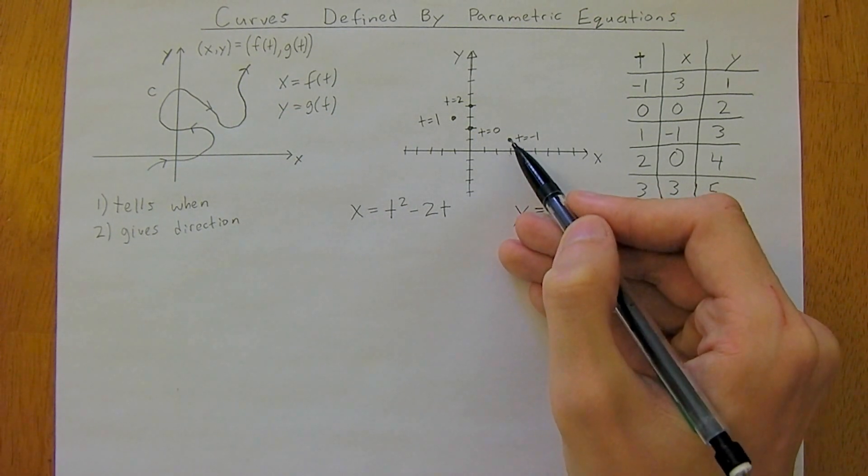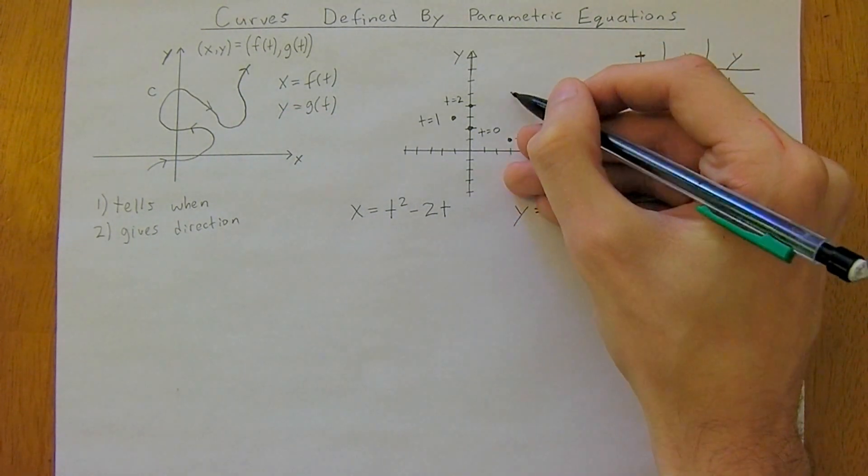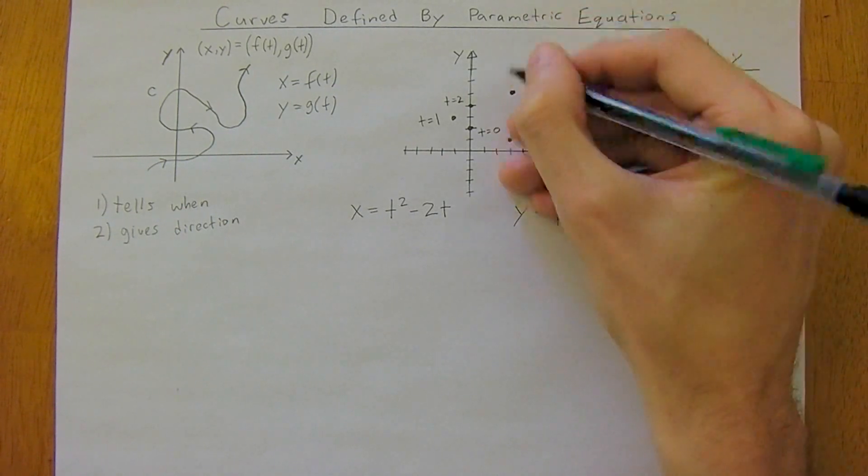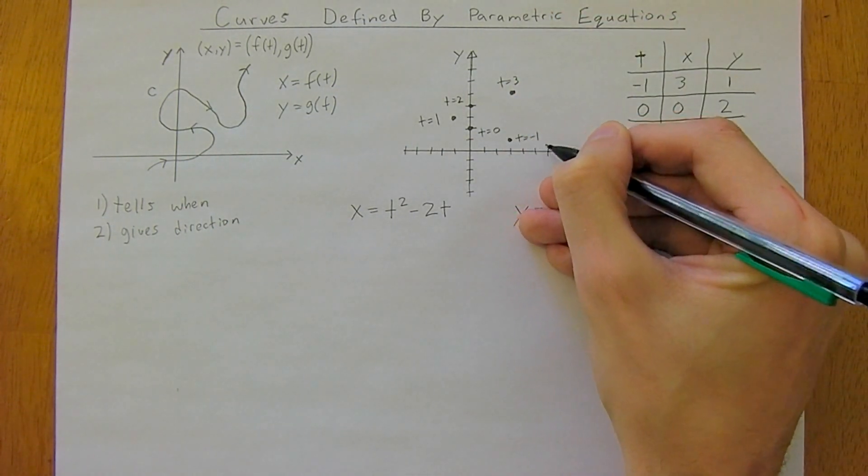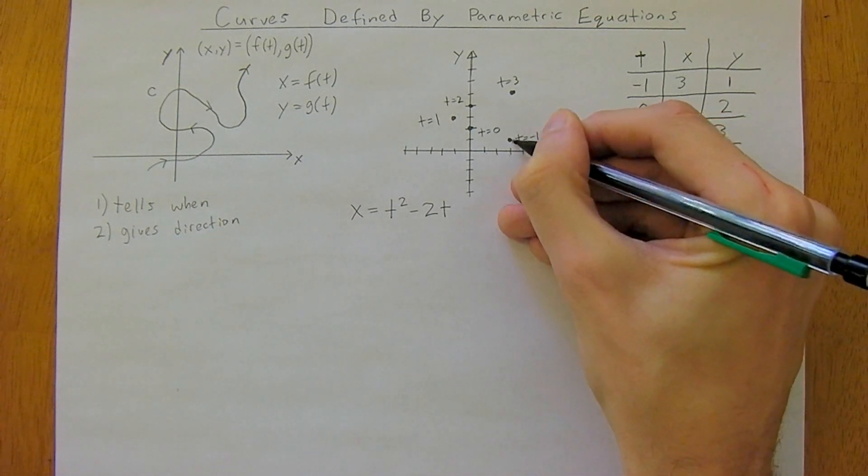So x is 1, 2, 3. Y is 1, 2, 3, 4, 5. Somewhere about up here at t equals 3. We've now got our curve and we can start filling it in.